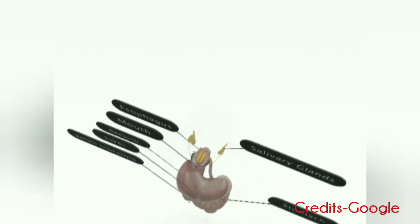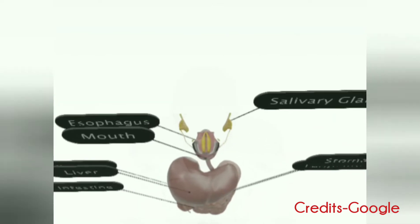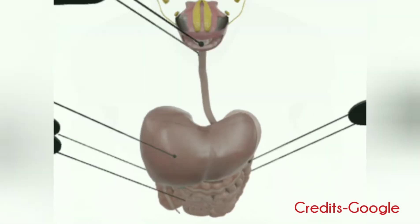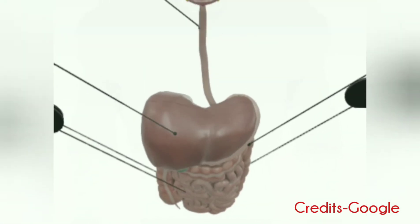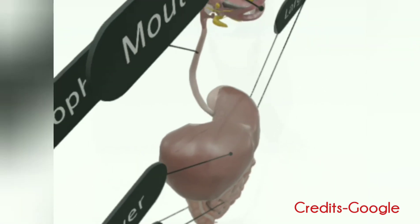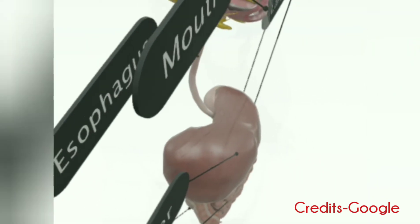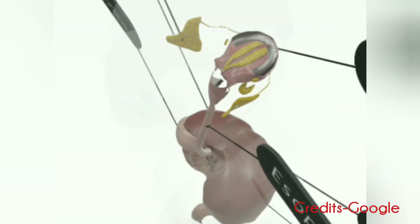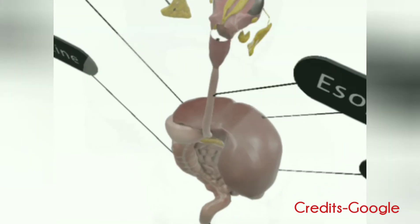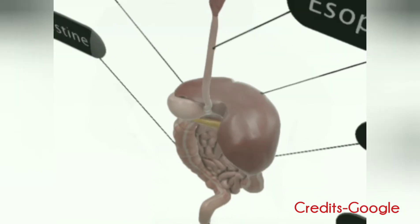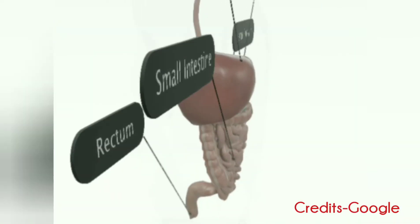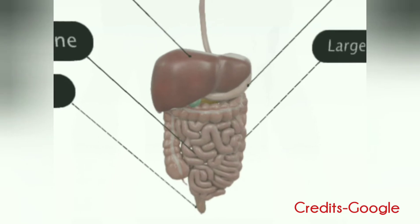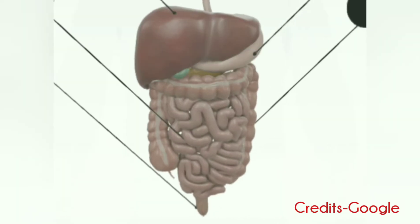There are several organs and other components involved in the digestion of food. The organs known as accessory digestive organs are the liver, gallbladder, and pancreas. Other components include the mouth, salivary glands, tongue, teeth, and epiglottis.